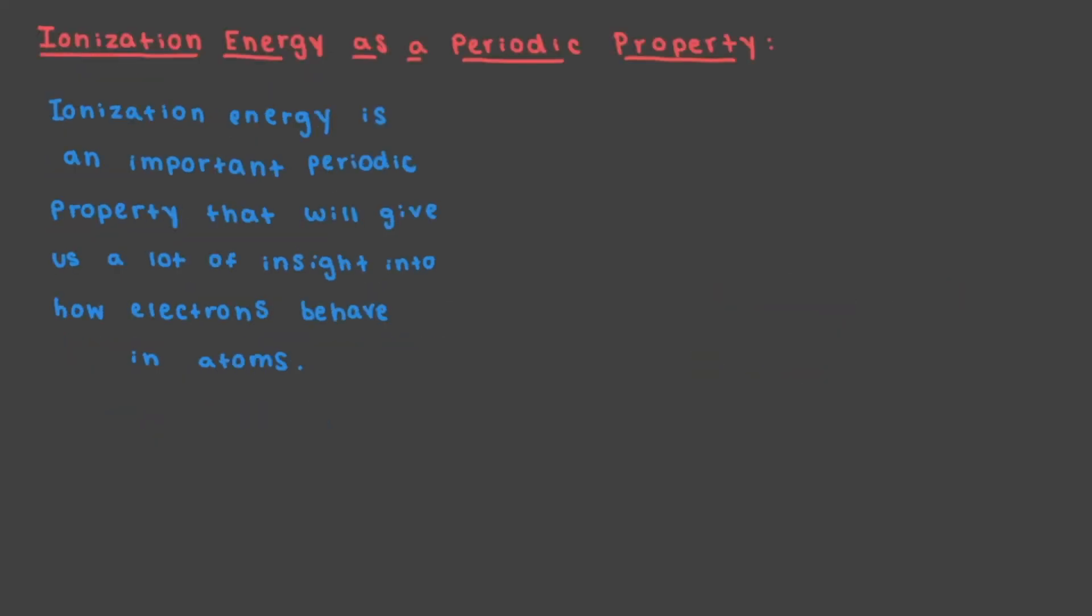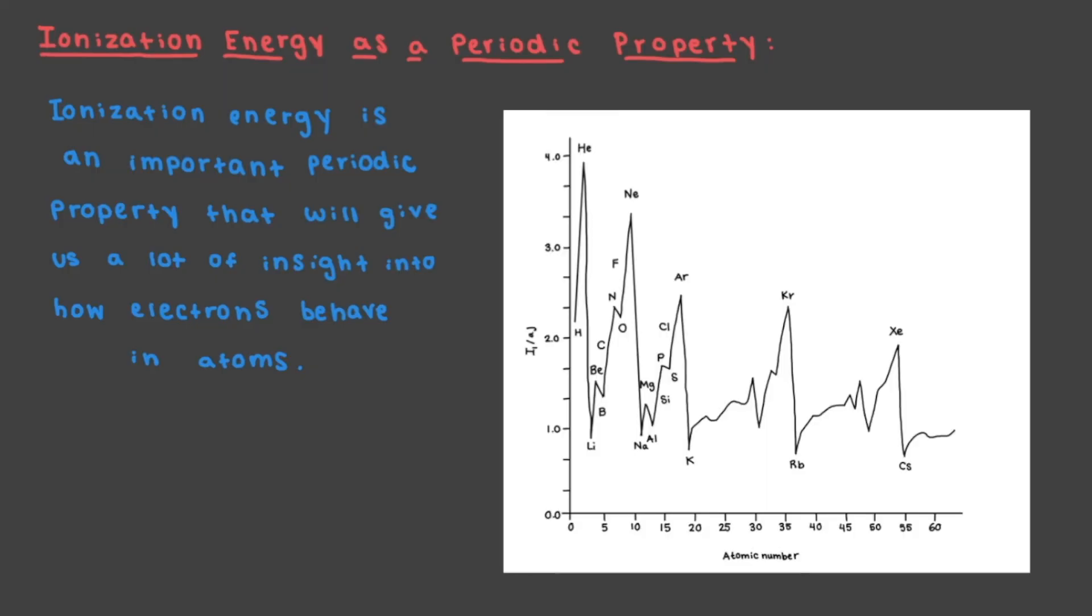Ionization energy is an important periodic property that will give us a lot of insight into how electrons behave in atoms. If we look at this graph of the first ionization energy against atomic numbers, interesting and somewhat confusing patterns begin to emerge.